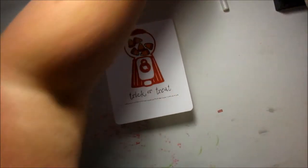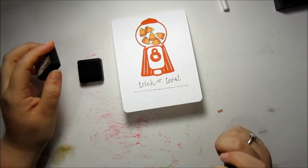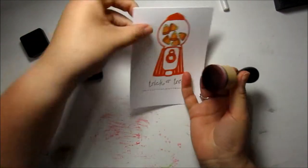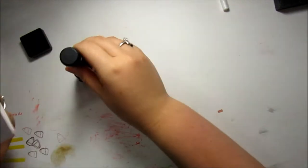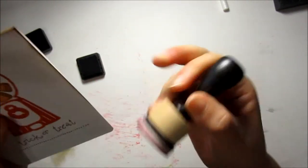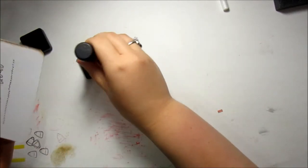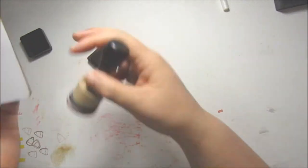And then just to finish off the card, I have the Tim Holtz Distress Ink Gathered Twigs and I'm just going to use my mini ink blending tool. I'm just going to distress the edges a little bit. I'm going to make sure that the edges are dark and then I'm kind of going to go around and pull the color in so that it's a little bit shaded on the inside of the card too.